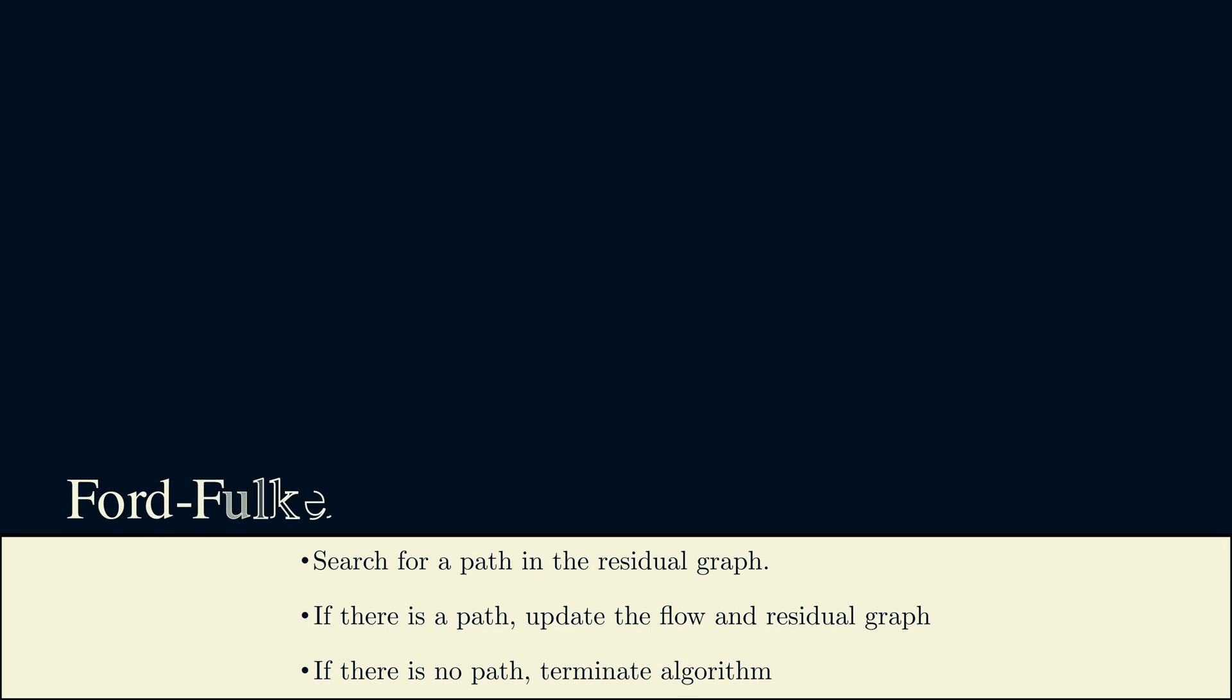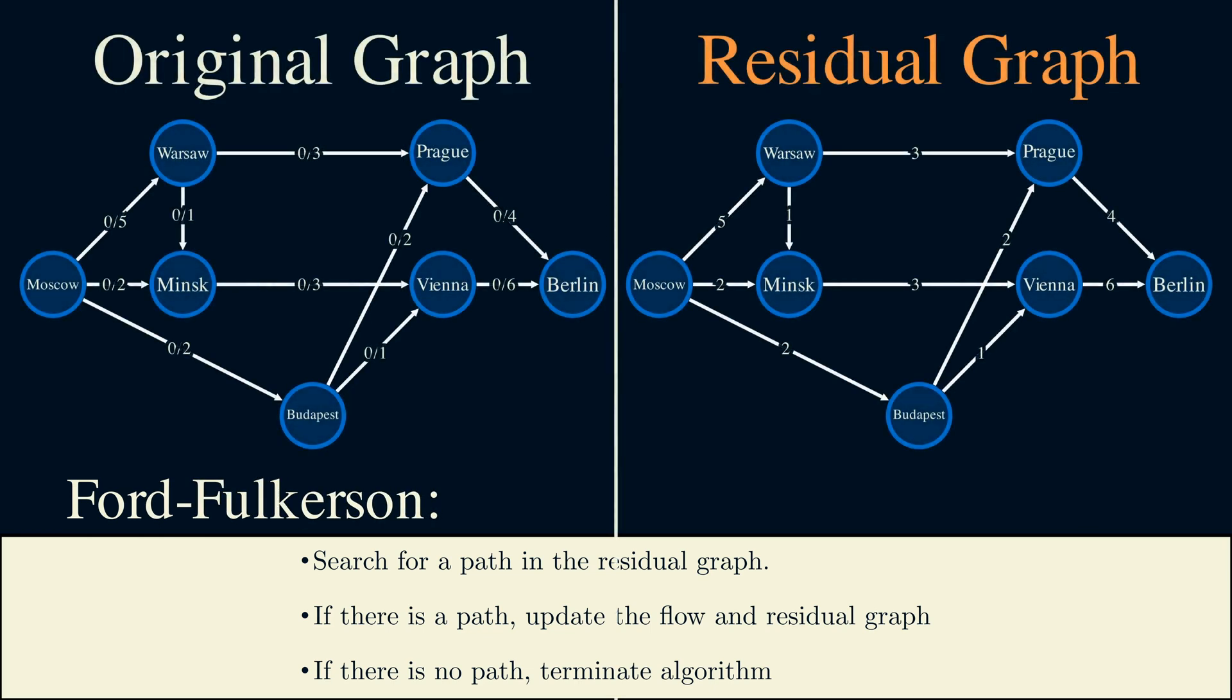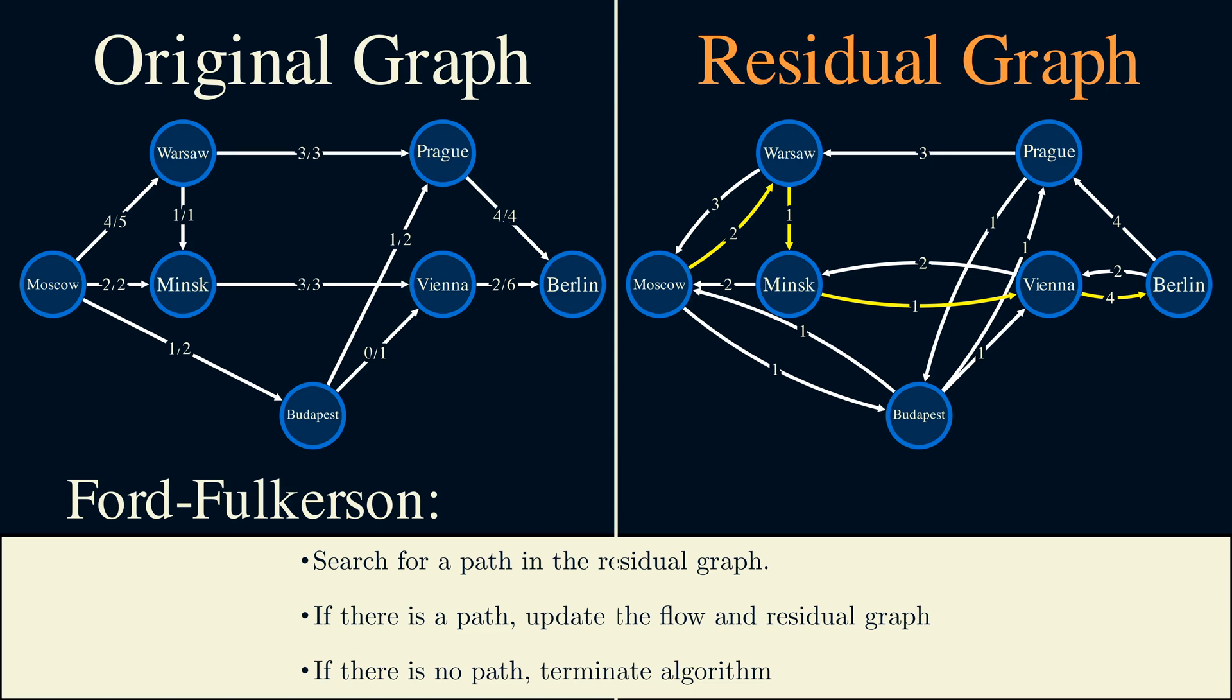Let's test this on our example, where we start with 0 flow. We find a path in the residual graph, and find the minimum capacity. We augment 3 flow along the original graph. Then we update the residual graph. We do this until there are no more paths in the residual graph. Now, Moscow can only reach Warsaw, so there are no more paths to Berlin, and the algorithm terminates. And once again, we have a flow of 8.